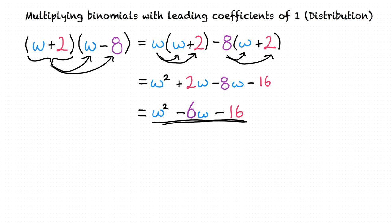So to multiply two binomials using distribution, we first distribute the first binomial to both terms in the second binomial, and then simplify each of those terms using distribution. This is not the only technique to do this, but it will work every time.